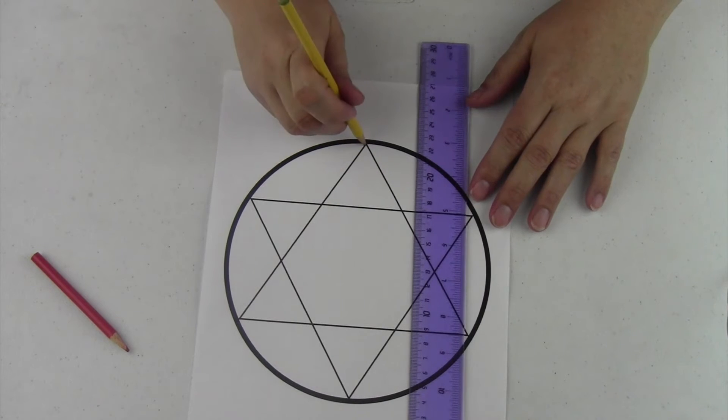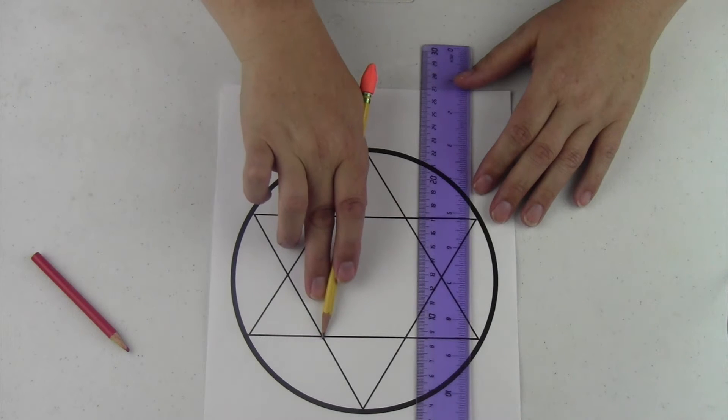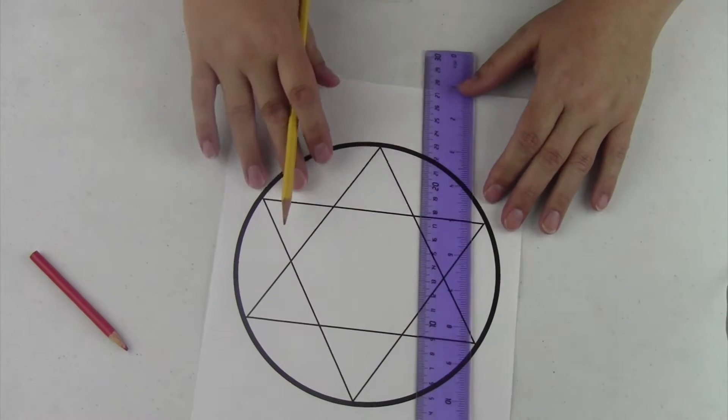Starting at one of the angles, we're going to make two lines through the bottom part of the angle that has been marked by the other triangle.